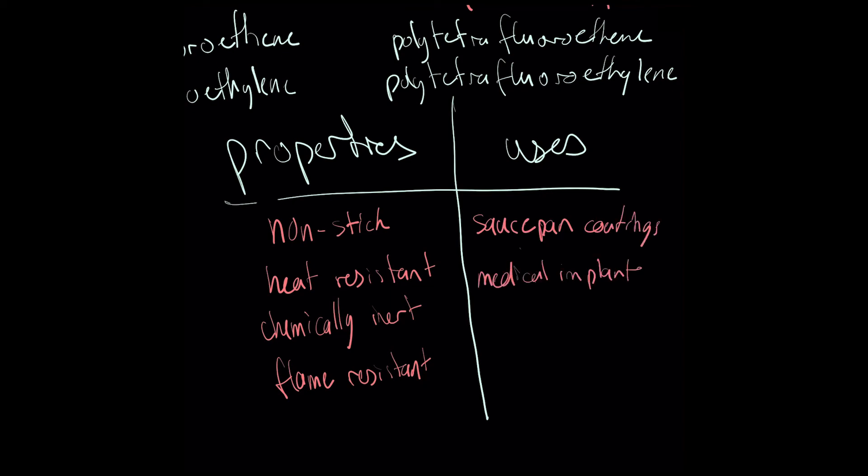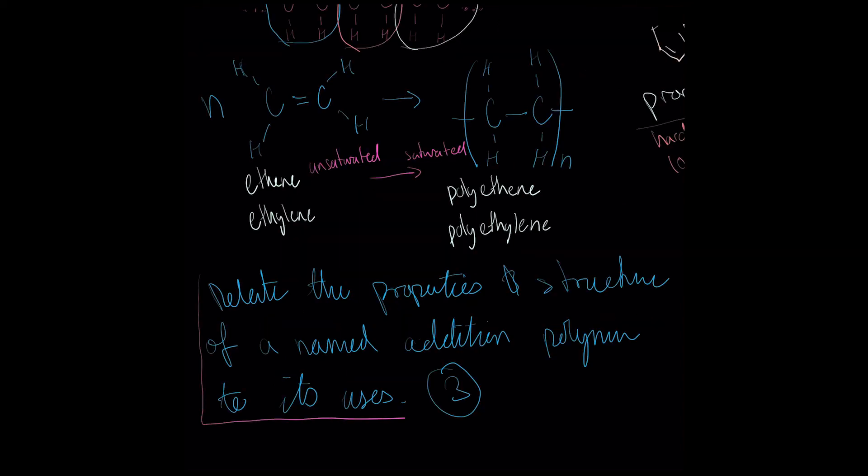Let's summarize by having a look at an exam-style question and attempting to answer it. Relate the properties and structure of a named addition polymer to its uses for three marks. Let's see if we can answer this question in a productive way for each polymer we've looked at today.